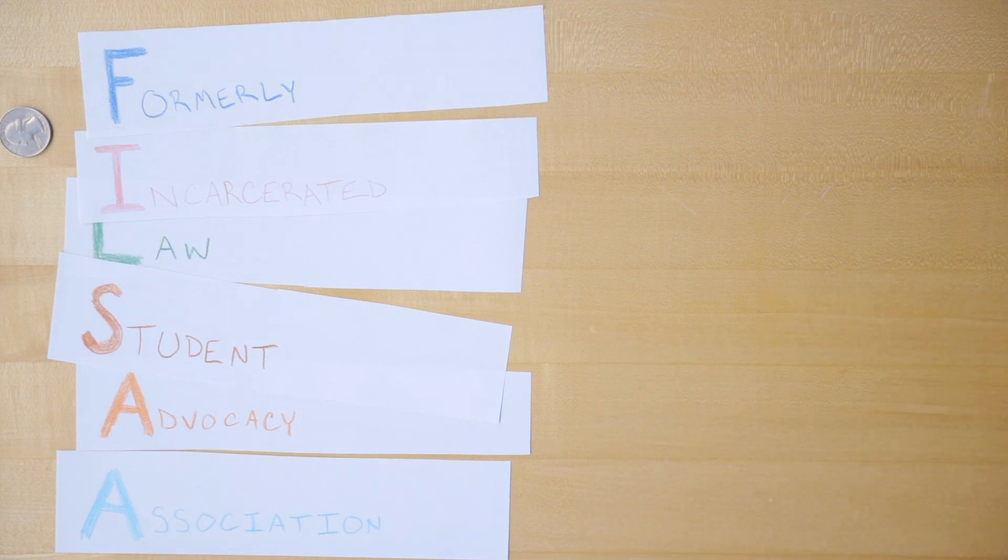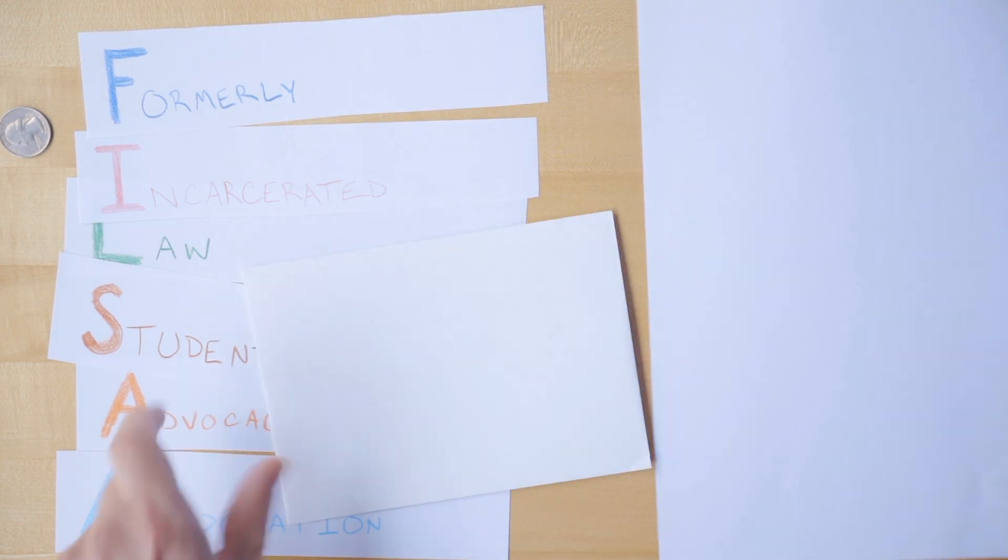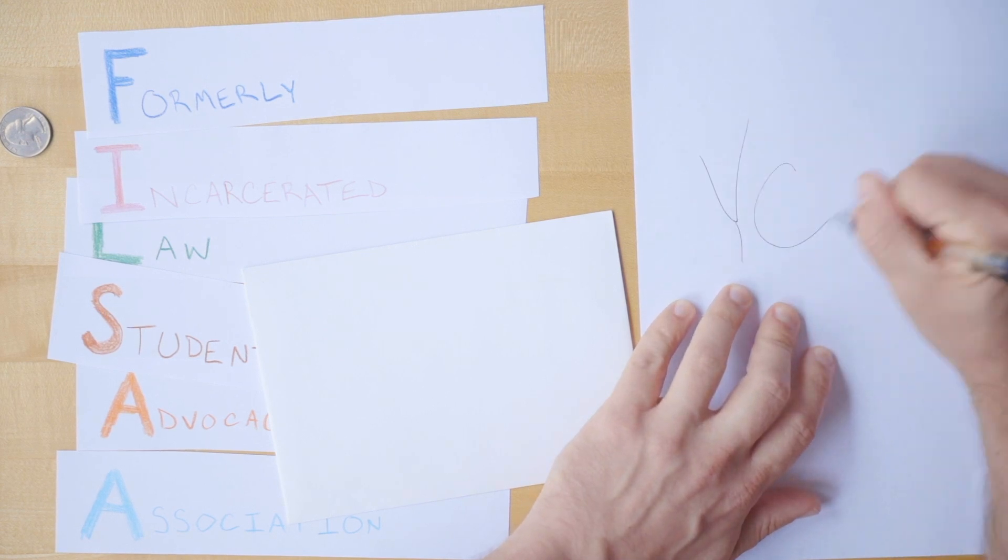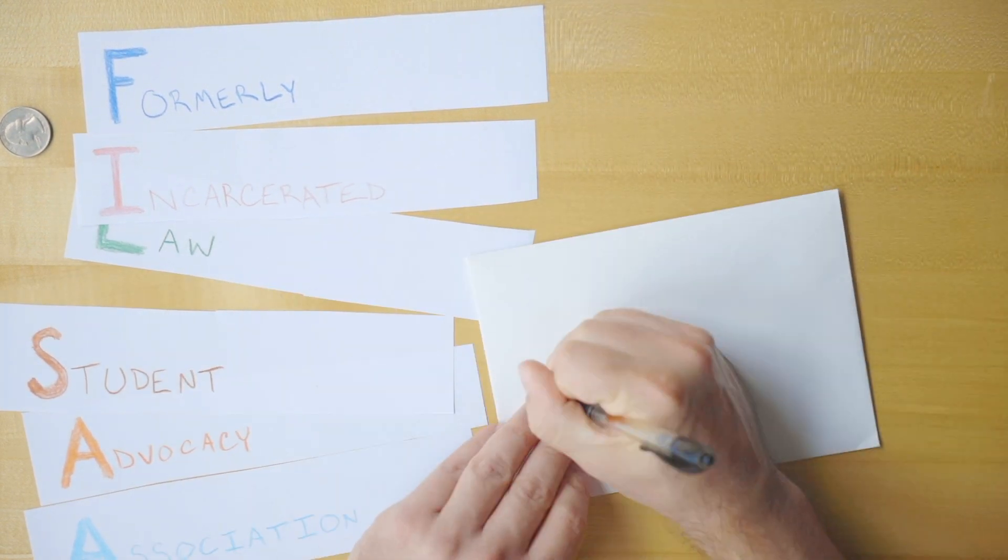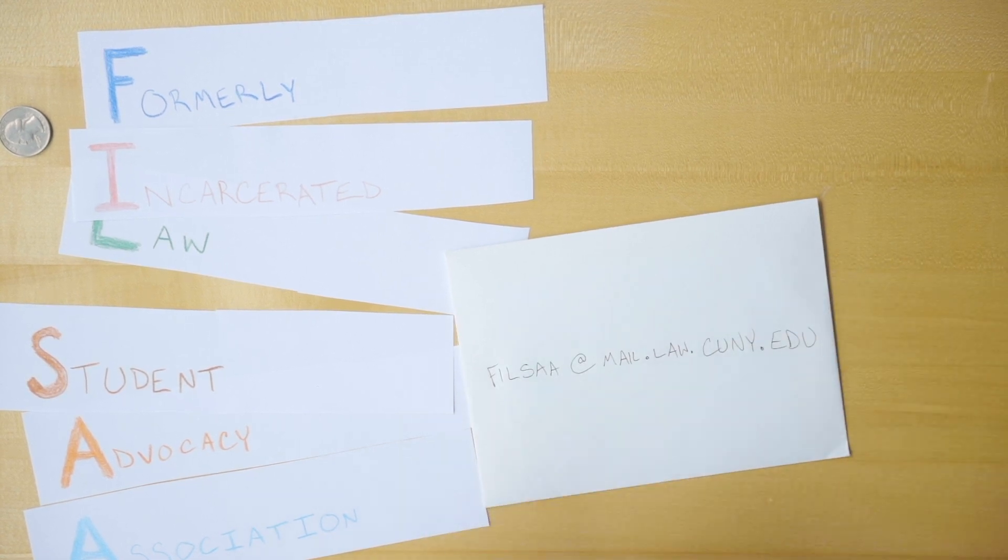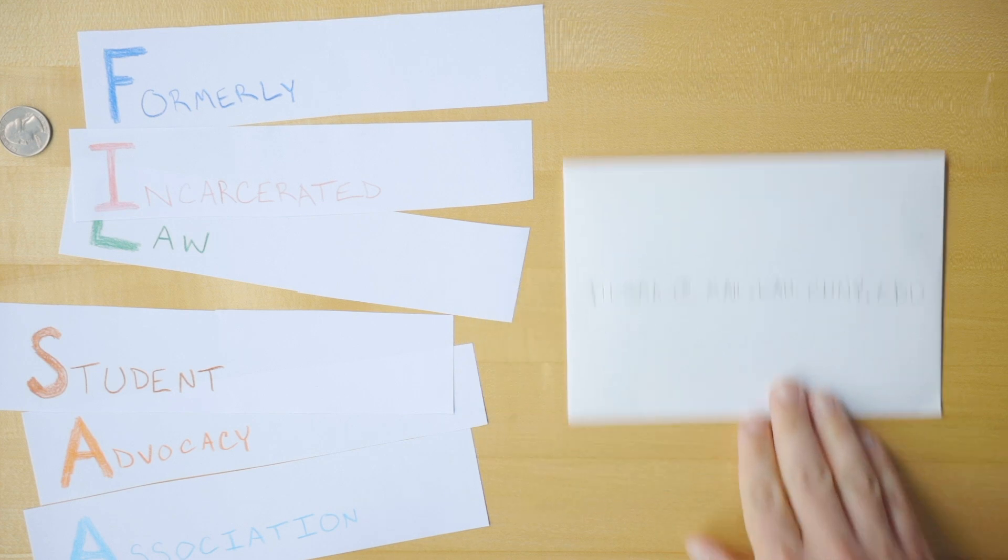We have a lot planned for this year, and we need your help. If you'd like to get involved advocating for those most affected by an unjust system, email filsa at mail.law.cuny.edu. Likewise, if you've been arrested or otherwise involved in the criminal justice system, reach out. We can't wait to meet you and do this thing together.